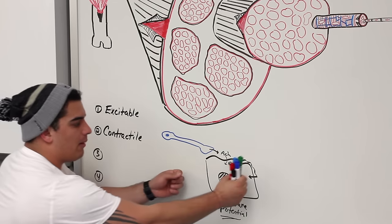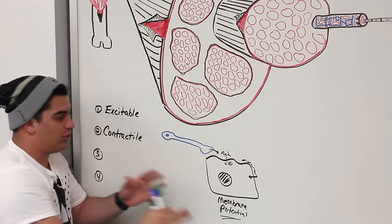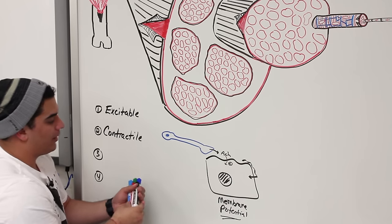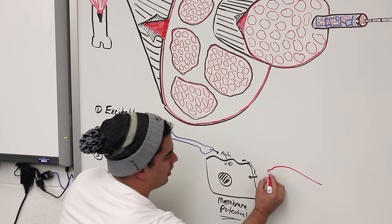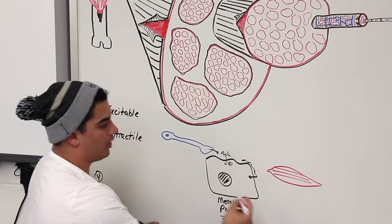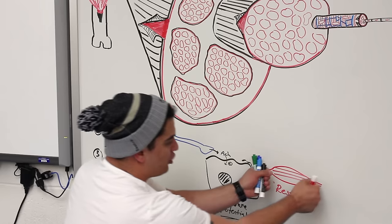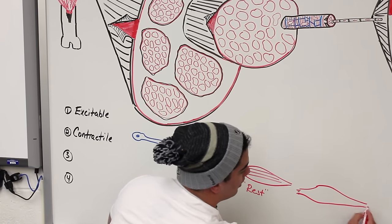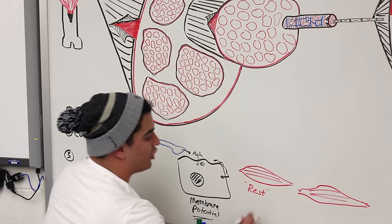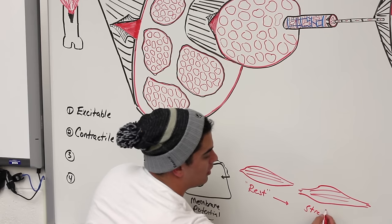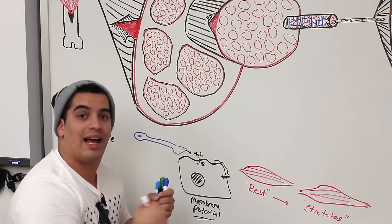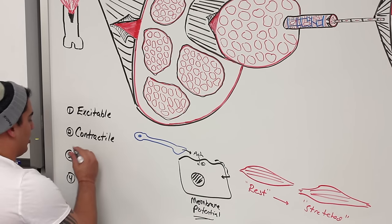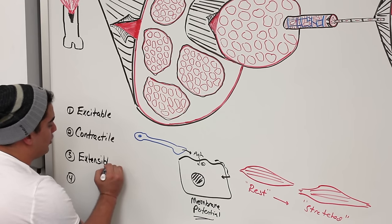Another characteristic is that muscles can be stretched beyond their normal resting length. For example, a muscle at rest can be stretched to a longer length. This ability to stretch beyond the normal resting point means the muscle is distensible, or extensible — it's stretchable.